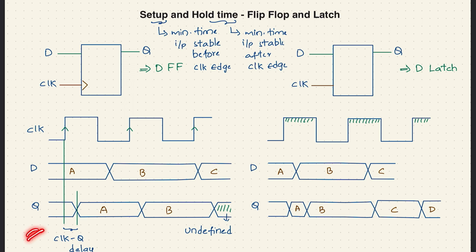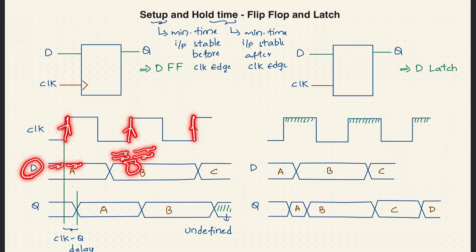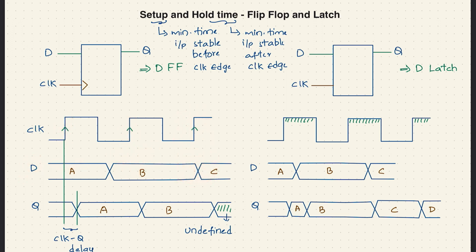In this timing diagram, D is the input. For the first clock edge, setup and hold time is not violated. For the second clock edge also, setup and hold time is not violated because input B is stable before and after. But for the third clock edge, setup time is violated — input C is not stable before the clock edge — that is why output Q cannot read C.